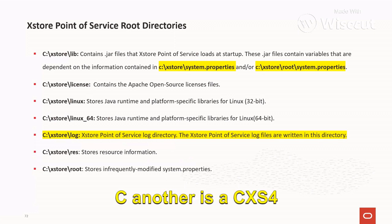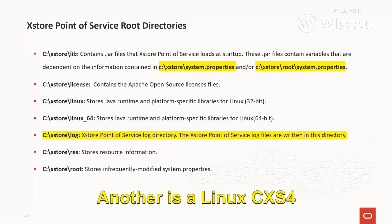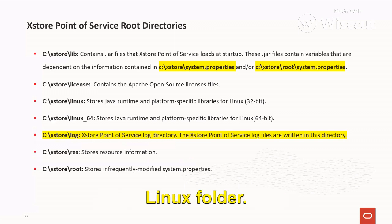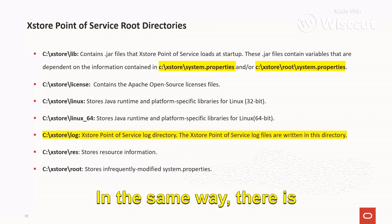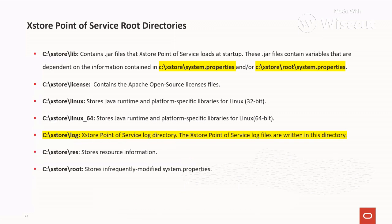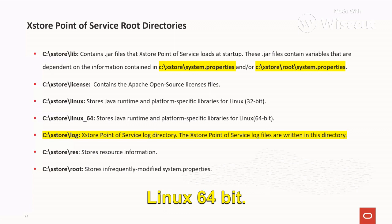Another is C:\AccessStore\license. This will have the license file for the Apache open source. Another is the C:\AccessStore\linux folder — it will have the Java runtime and platform-specific libraries for Linux 32-bit. In the same way, there is another folder linux_64, which will have the Java runtime and platform-specific libraries for Linux 64-bit.